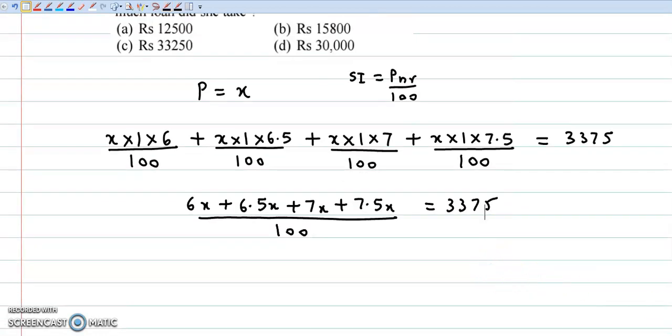Now we cross multiply. The numerator becomes 6 plus 6.5 plus 7 plus 7.5. This comes to 27X is equal to 3375.